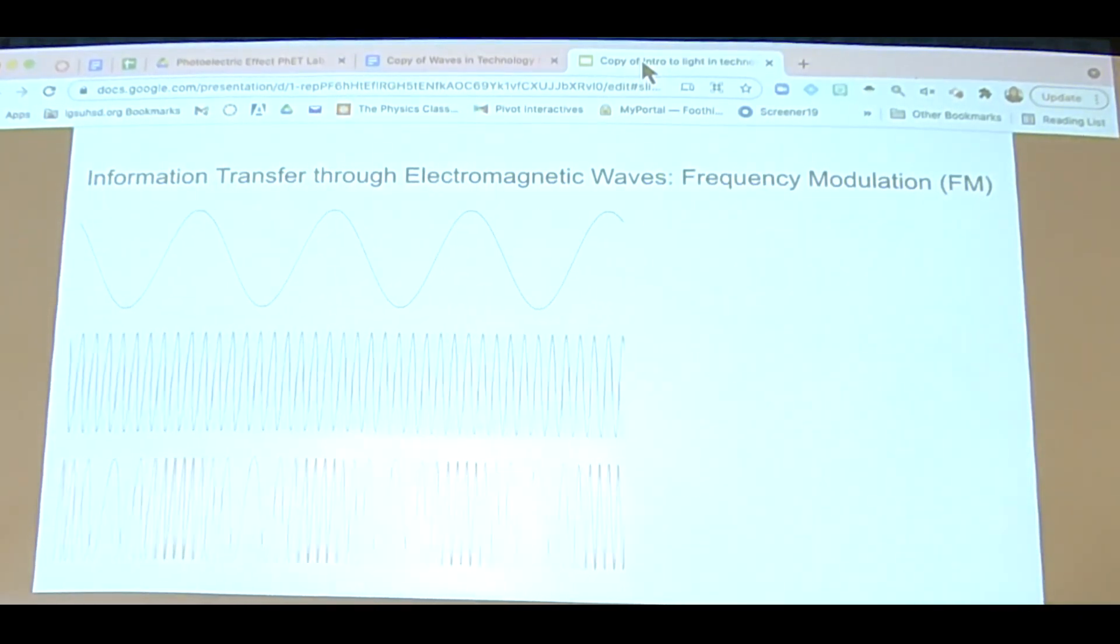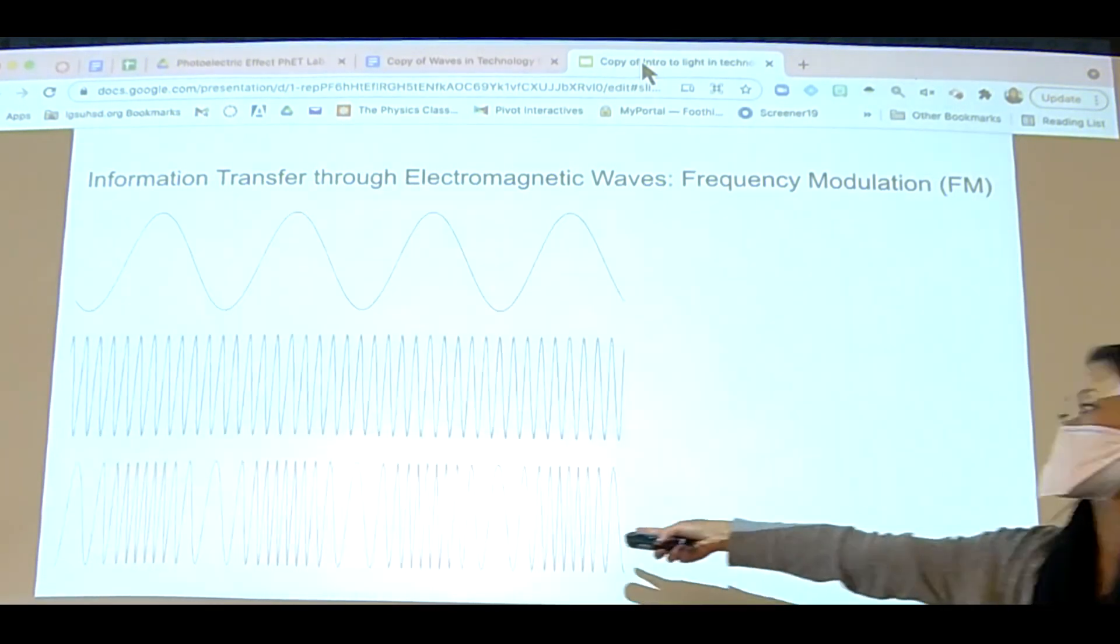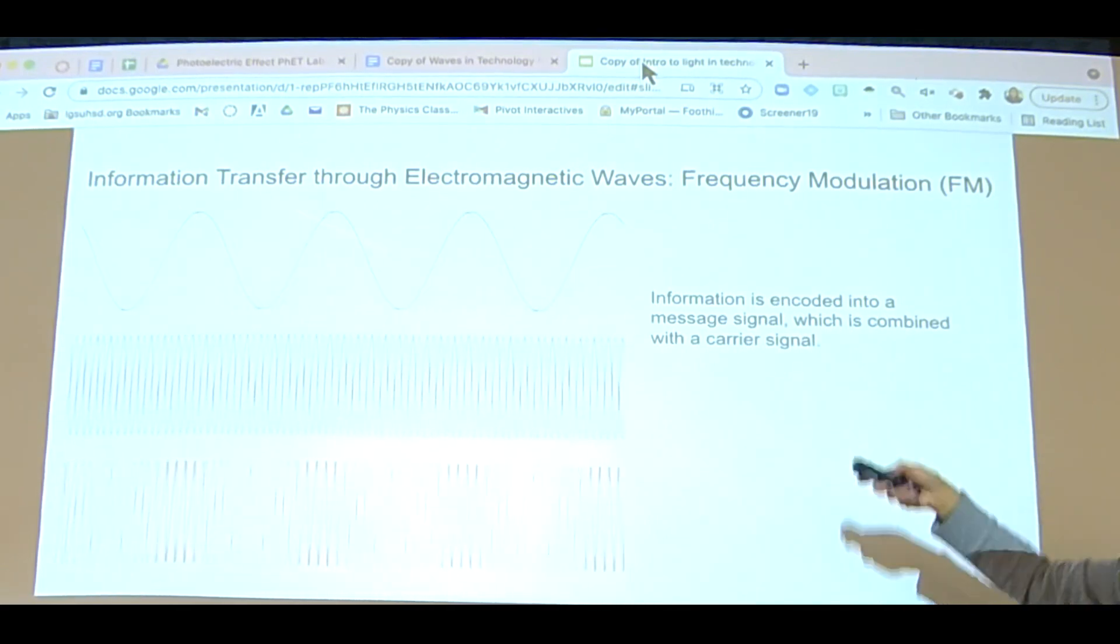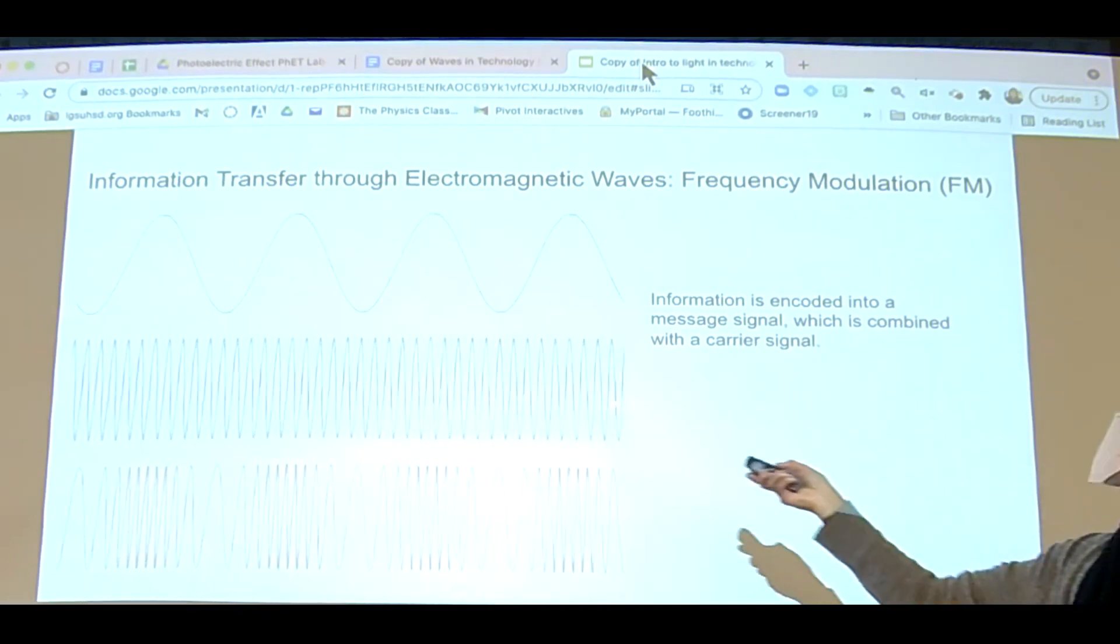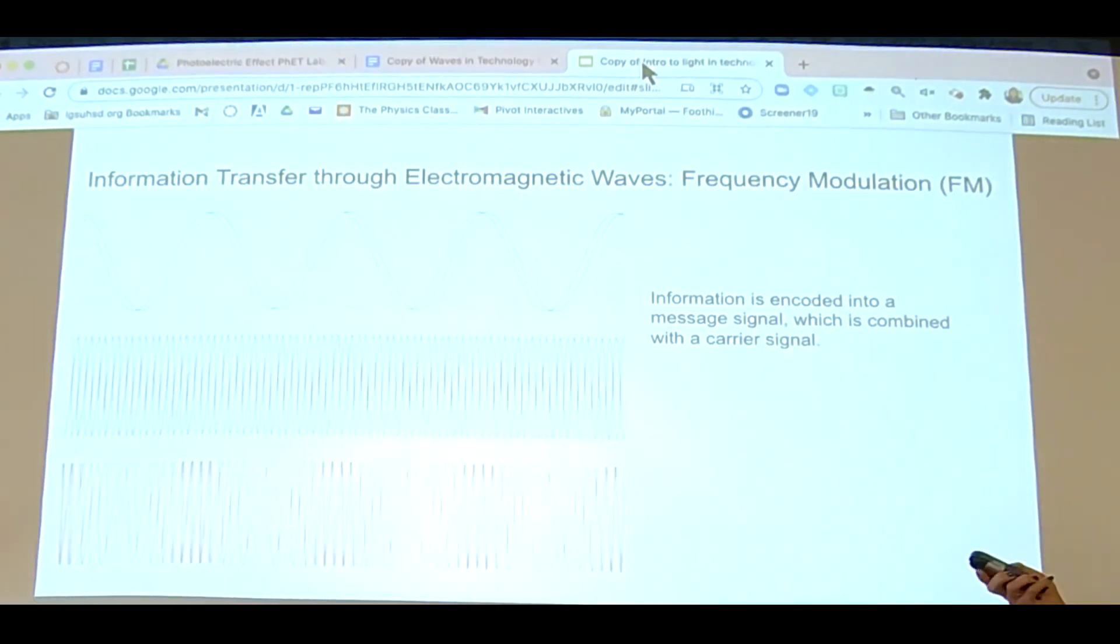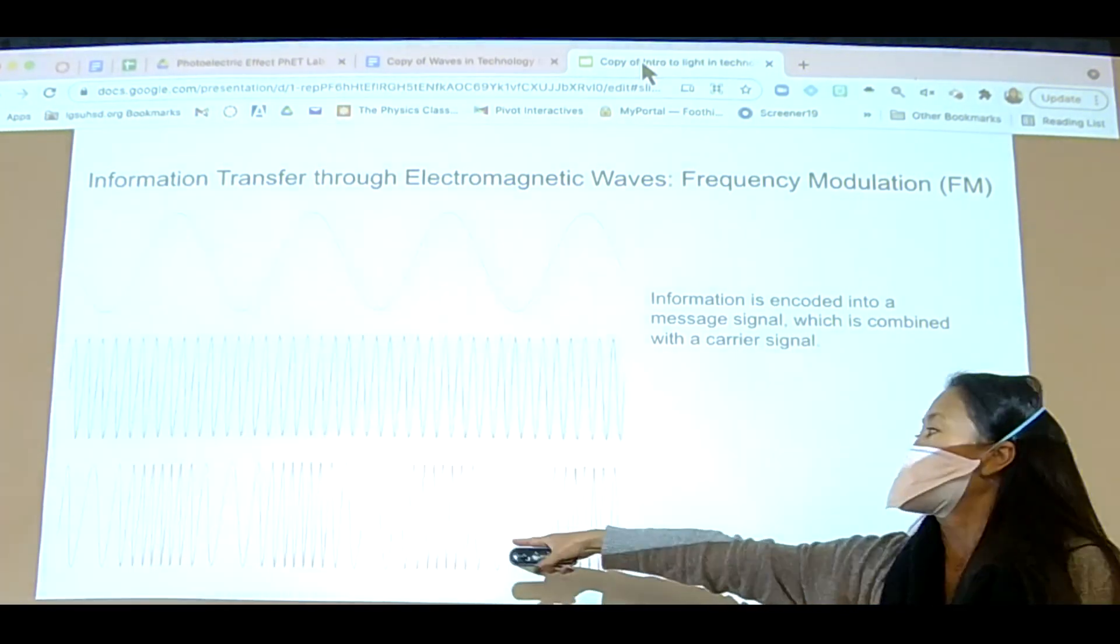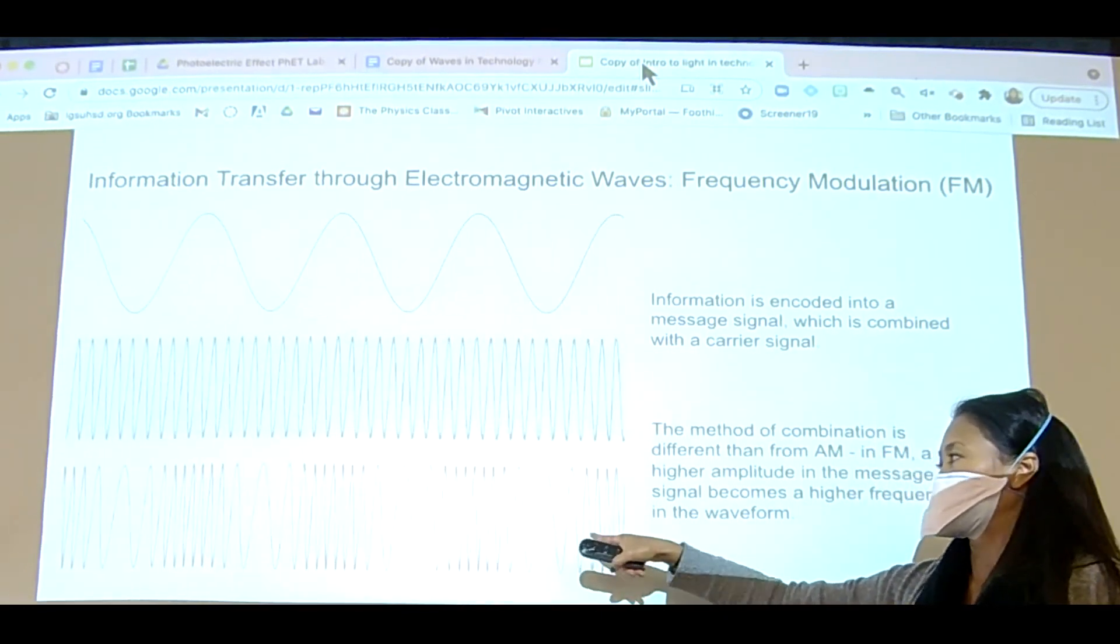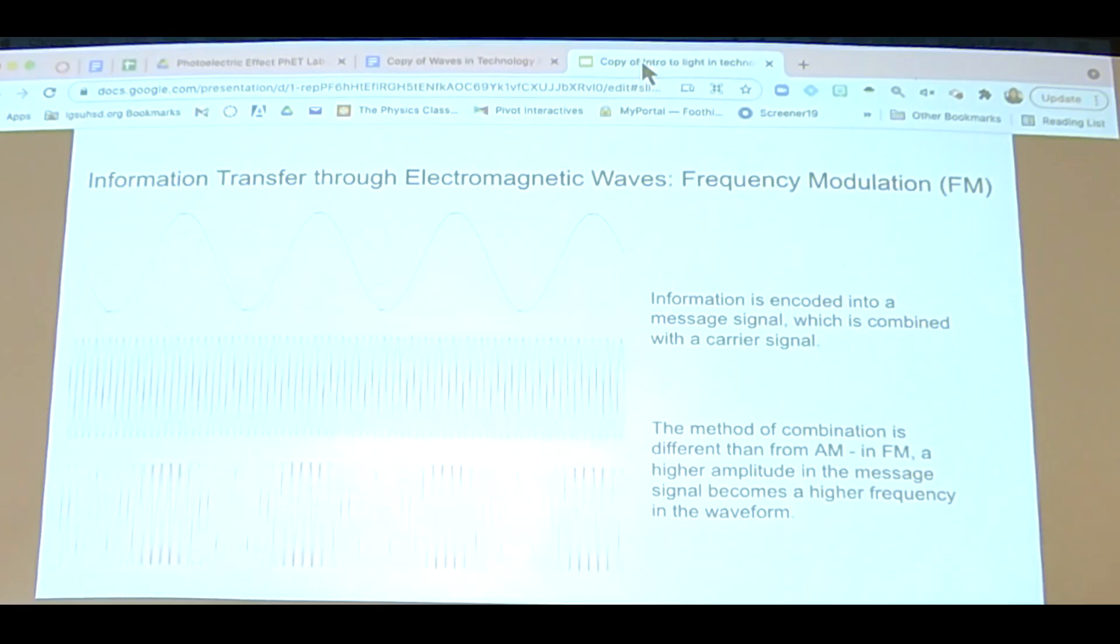Here we've got the FM radio wave, which is very different. We've got the information, which is your music or your news, whatever you're listening to. We've got the carrier signal. And when they interact, instead of making these wave packets, it makes periods of high and low frequency within the wave. So that's how AM and FM differ. This is information transfer.